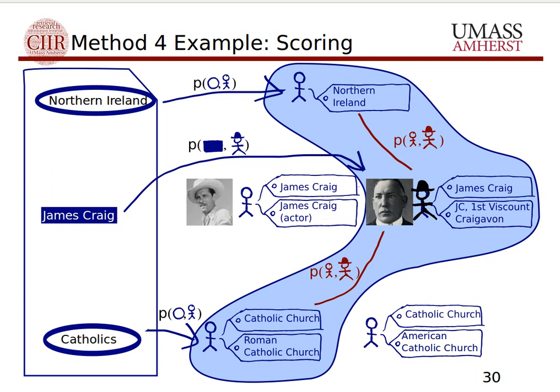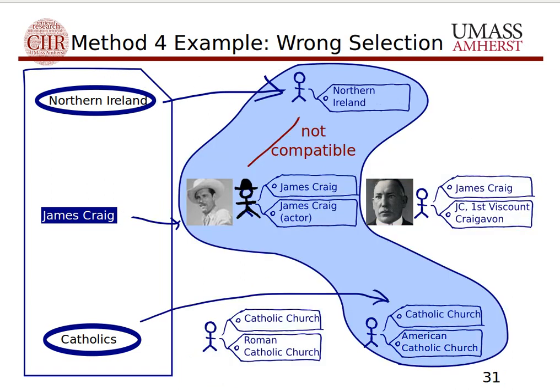We inspect different entity assignment settings — for instance choosing Northern Ireland, the first Viscount Craigavon, and the Roman Catholic Church. The score includes the similarity between the query mention James Craig and the candidate entity, plus for every neighboring mention like Northern Ireland, the similarity between that string and its candidate entity. It also includes compatibility factors measuring how likely it is to see Northern Ireland mentioned in the context of James Craig the first Viscount Craigavon. A setting choosing James Craig the American actor might be compatible with the American Catholic Church, but it's very surprising to see the American actor mentioned in the context of Northern Ireland — making Northern Ireland the disambiguating factor.